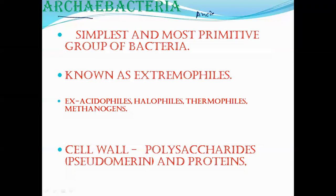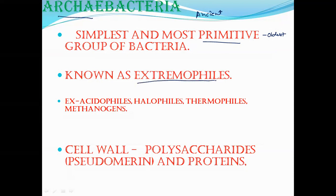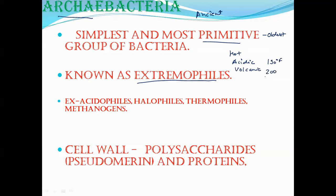First we talk about archaebacteria. Archaea means ancient, so this is the most simplest and most primitive group of bacteria — the oldest form of bacteria. They survive in extreme conditions, that's why they are known as extremophiles, like hot water, acidic environments, and volcanic eruptions. They can survive up to 190 degrees Fahrenheit and bear atmospheric pressure up to 200.